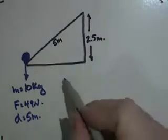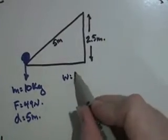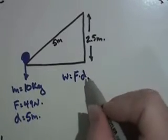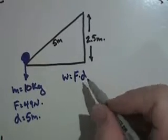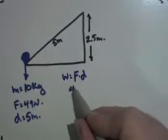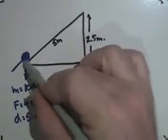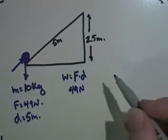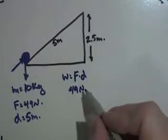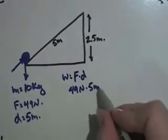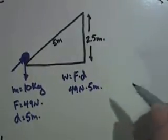Well, work is equal to the force that's applied times the distance through which that force is applied. So if I've got 49 newtons of force that I'm pushing on it with, then I have to move it a distance of 5 meters. Let's see, that's 50.